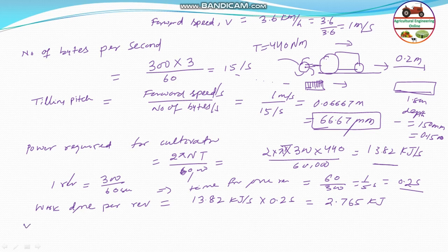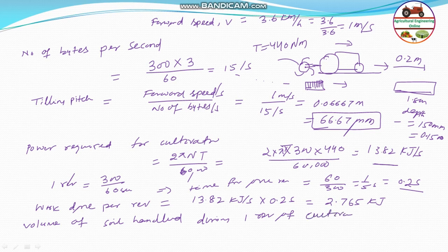Therefore, the volume of soil handled during one revolution of the cultivator is: forward movement 0.2 meter, multiplied by width 1.8 meter, multiplied by depth 0.15 meter, which equals 0.054 cubic meter of soil handled per revolution.